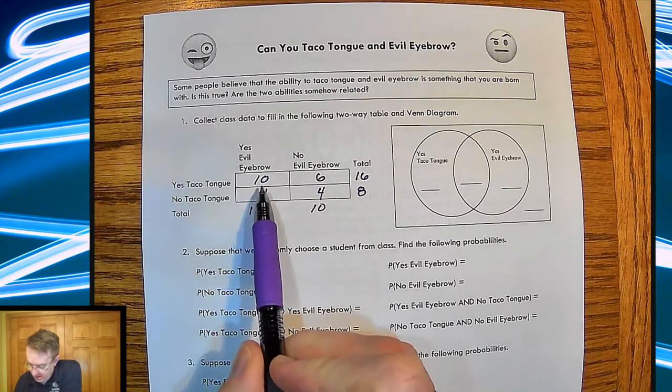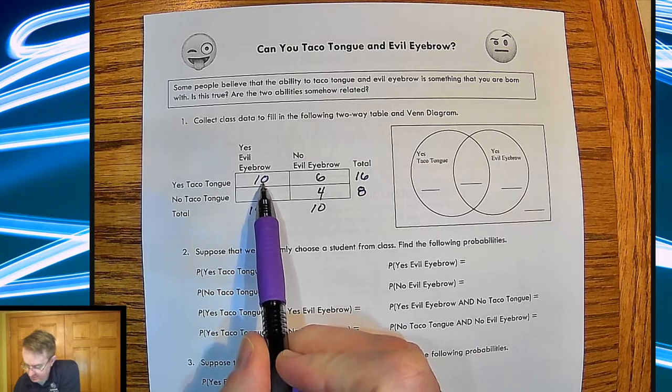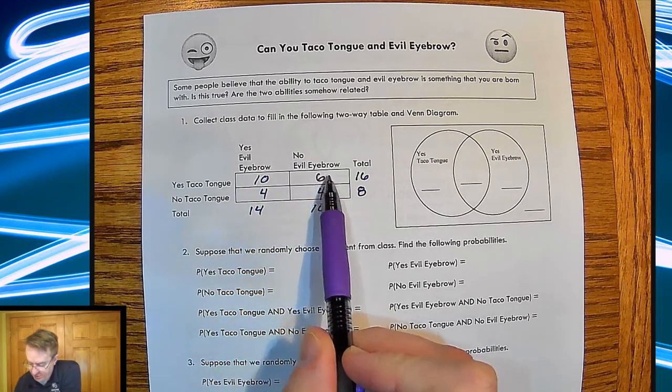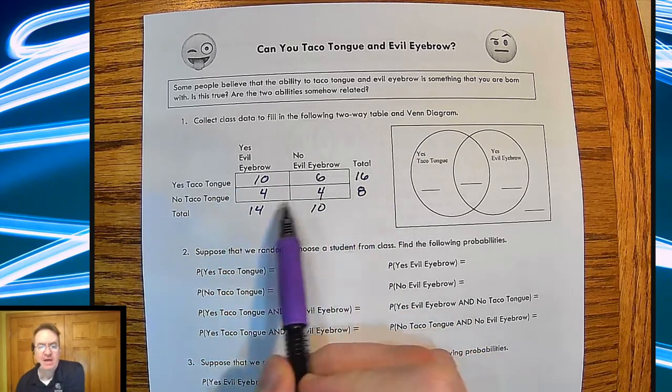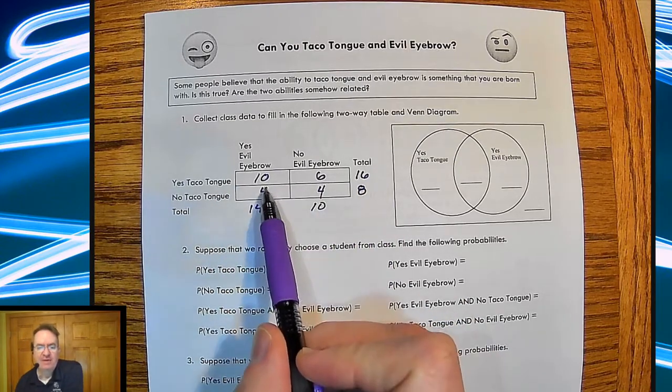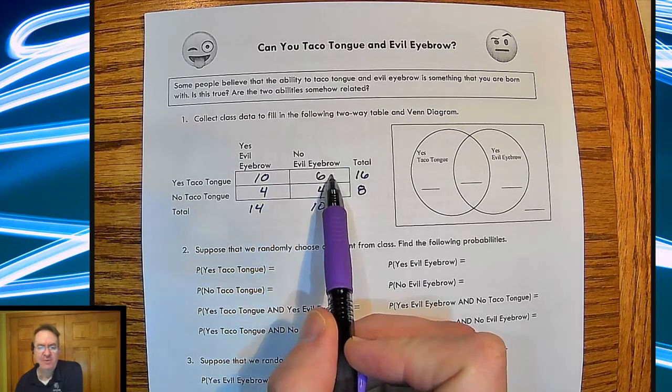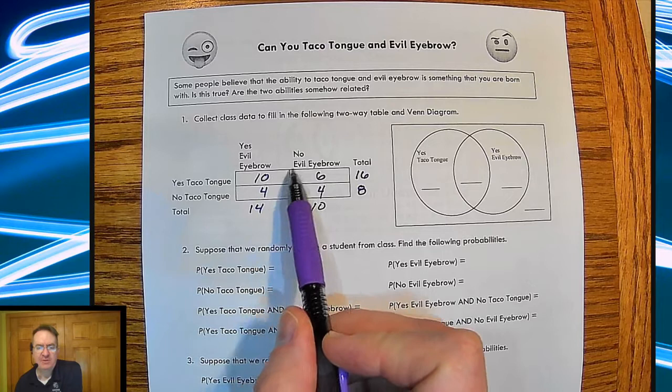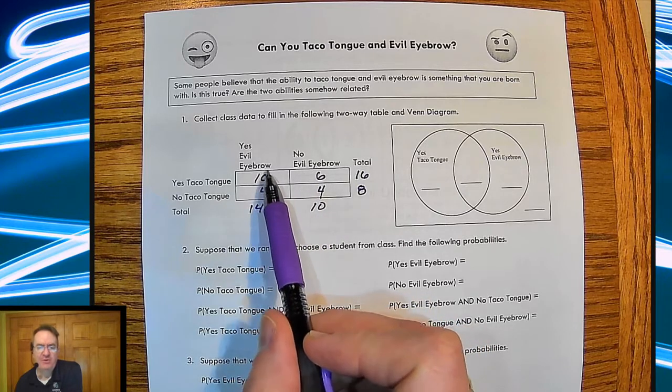Okay. I had 14 students who could do the evil eyebrow, 10 who couldn't. I had 16 who could do the taco tongue, 8 who couldn't. And then out of that, 10 of them could do both. 6 could do yes to the taco tongue, not the evil eyebrow, no to the taco tongue, et cetera, et cetera.